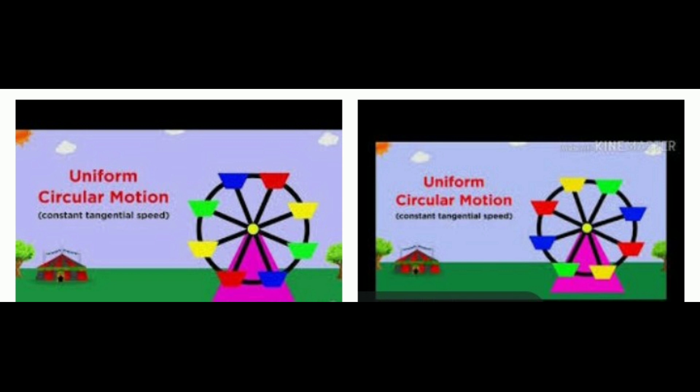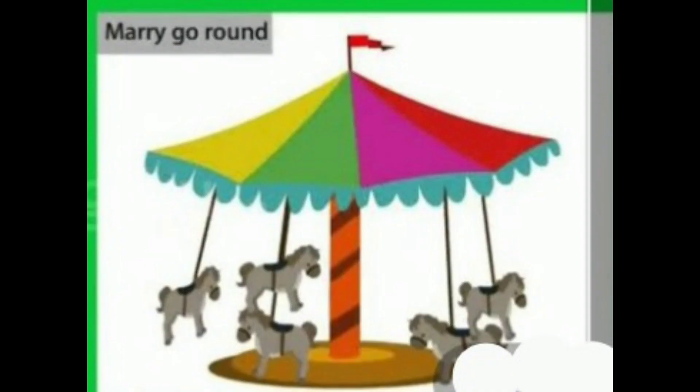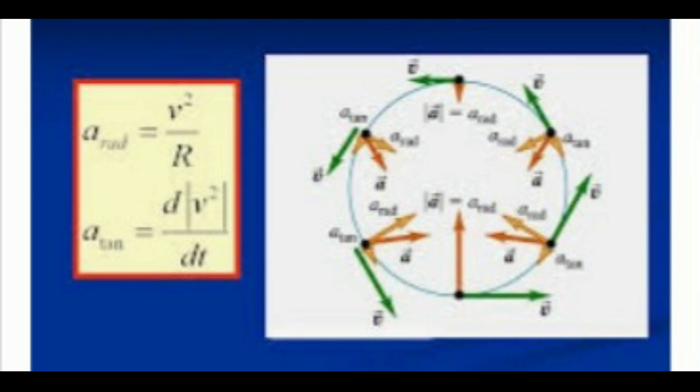The stone moves along a straight line tangentially to the circular path. This is because once the stone is released, it continues to move along the direction it has been moving at that instant. The direction of motion changes at every point when the stone was moving along a circular path.